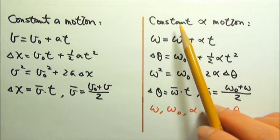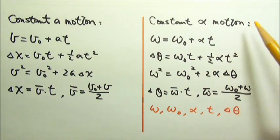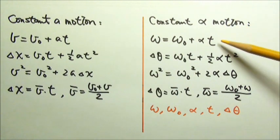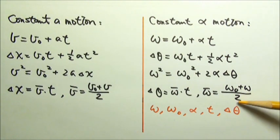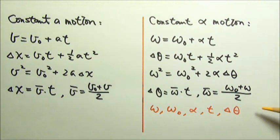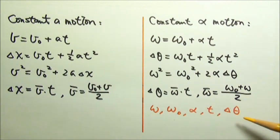That means for a constant angular acceleration motion problem, if we know three things, we'll be able to use one of these equations to find the fourth quantity, and then use another equation to find the fifth quantity. So if we know three of these, we'll be able to find the other two.